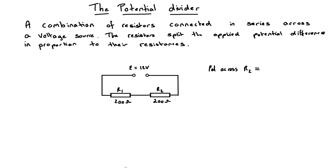Here we have an example of a potential divider. We have two 200 ohm resistors connected in series across an applied voltage of 12 volts, and what will happen is they will split that 12 volts between them. Since we have equal resistances, they will split the applied voltage equally, giving us six volts across resistor R2. There we have a very simple potential divider circuit.